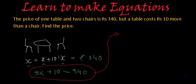So let's transpose this 10 to the right hand side. So we will get 3x will be equal to 340 minus 10. That means 3x is equal to 330.